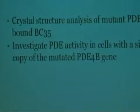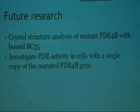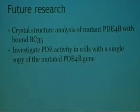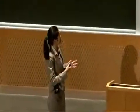To confirm our inference, we would like to perform crystal structure analysis of the mutant phosphodiesterase complex with compound BC35, just to verify whether our identified site really is the one the compound binds to. Also, there is a slight margin for error because we had multiple plasmid copies inside the cell, so the observation could simply be due to multiple phosphodiesterases being expressed. To better model physiological conditions, we would like to have only a single copy inside the cell.